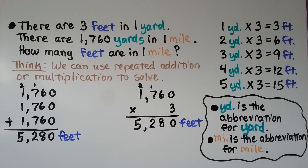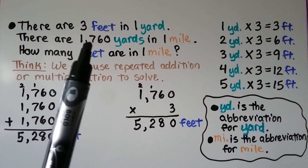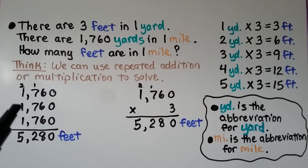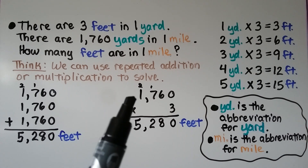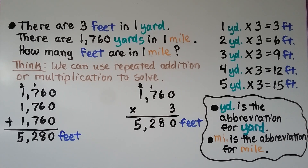There are three feet in one yard and 1,760 yards in one mile. How many feet are in one mile? Because each yard equals three feet, we can use repeated addition — 1,760 plus 1,760 plus 1,760 — to find the feet in a mile. Or we could multiply 1,760 times three to get 5,280 feet.